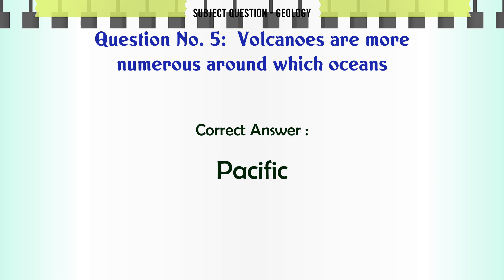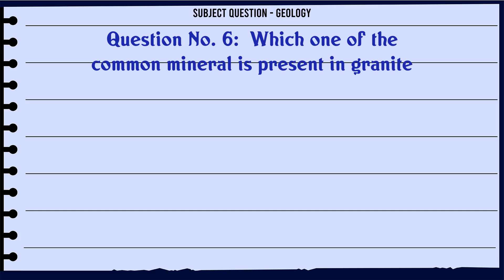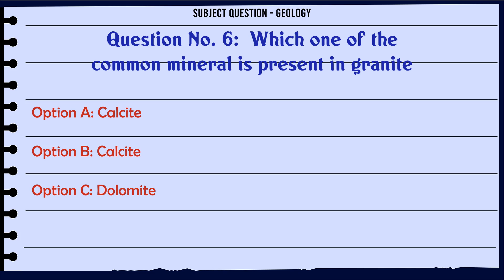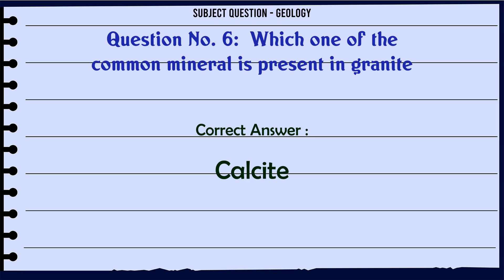Which common mineral is present in granite? A. Calcite. B. Calcite. C. Dolomite. D. Hematite. The correct answer is C. Calcite.